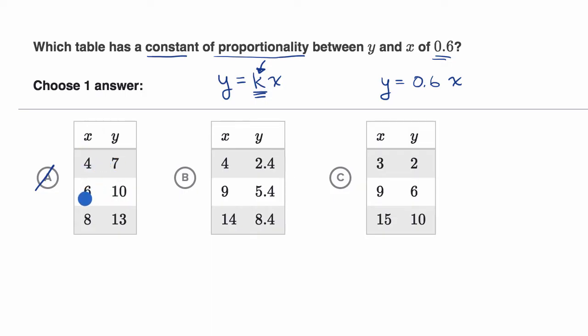In fact, this table isn't even a proportional relationship. For this first one, I would have to multiply by 7 fourths, and then here I'm multiplying by 10 sixths, which is equivalent to 5 thirds, and here I'm multiplying by 13 over eight. So I'm not multiplying by the same constant every time. So this isn't even a proportional relationship.